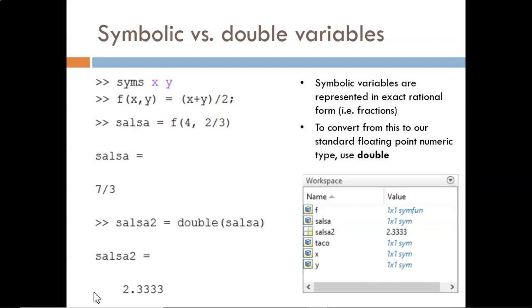What difference does this make? In this example, we pass in inputs of x equals 4 and y equals 2 thirds. This produces an output of 7 thirds. MATLAB shows this as a ratio of integers because that is an exact representation.